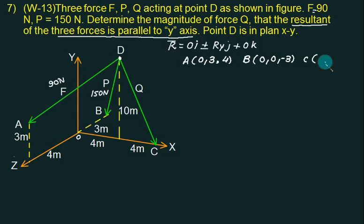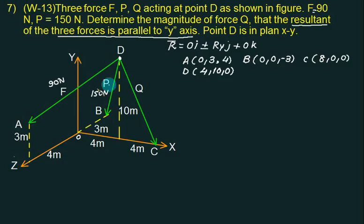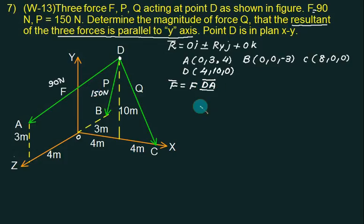What is the coordinate of point C? It is lying on the X-axis: 4 plus 4 equals 8, so C is (8, 0, 0). So the coordinates are now given. We will prepare for them one by one. Write F̄ equals F directed from D to A — that is DA̅ upon the magnitude of DA̅.